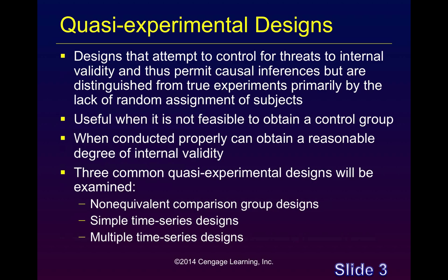In the previous lecture, where we discussed experimental designs, we covered a lot of ground that is equally applicable to the quasi-experimental design. The primary differentiating factor between the experimental design and the quasi-experimental design is either the lack of ability to randomly assign subjects to your study, or it is not feasible to have a control group.